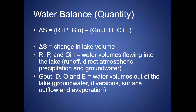What we also need for a longer-term nutrient budget is a water balance — we need to know the quantity of water, how much is going in via groundwater and so on. You want to know the volume of groundwater going into and out of the lake. The change in lake volume reflects the change in water volumes from runoff, direct atmospheric precipitation, and groundwater, minus any water leaving the lake from groundwater out, diversions, surface outflow, and evaporation. We know that evaporation plays a big role in influencing lake levels in Alberta.